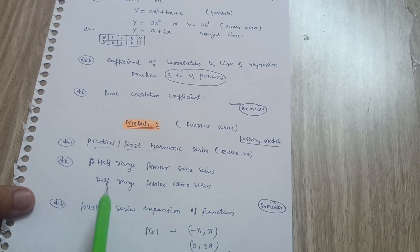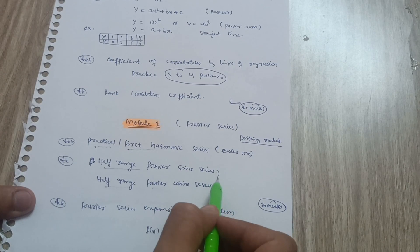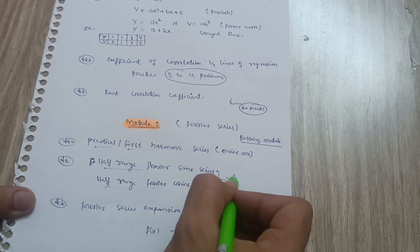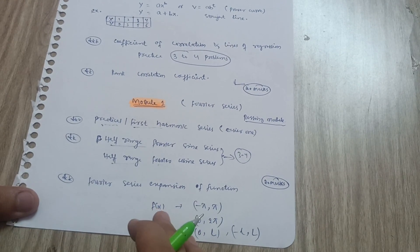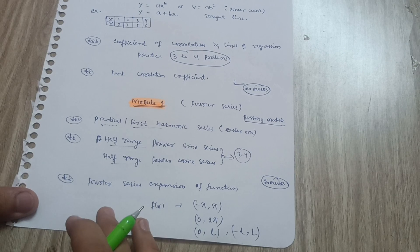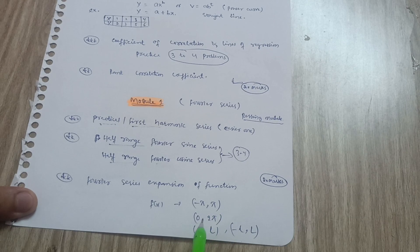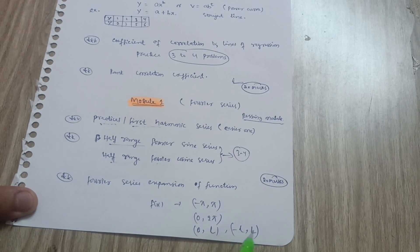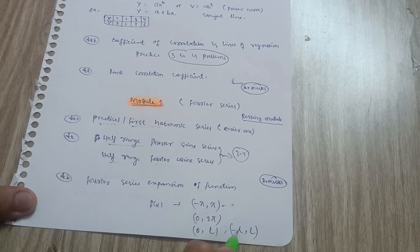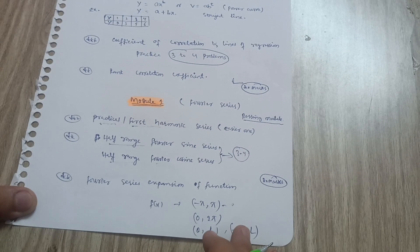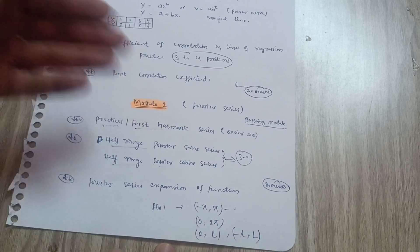Next is the half-range Fourier sine series and half-range Fourier cosine series — these two are the most important ones. Practice at least three to four problems from each. Next is the Fourier series expansion of a function, where they give f(x) equal to some function such as |x| or x, with intervals like -π to π, 0 to 2π, or -l to l. Practice two to three problems from each interval type. This covers what you need from Module 1.